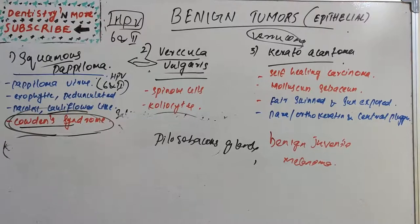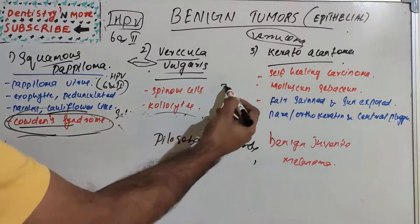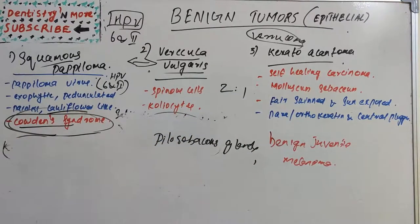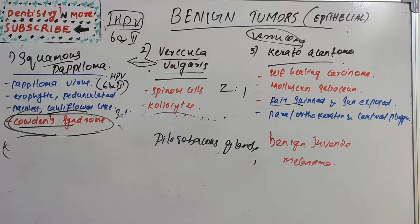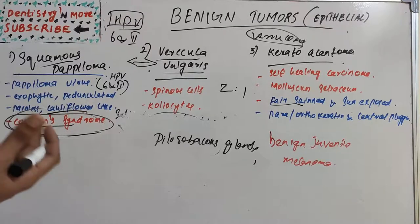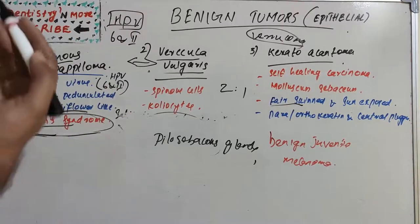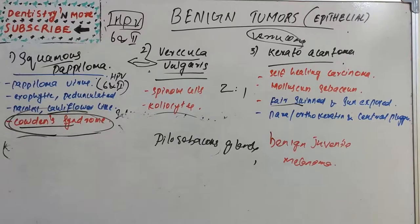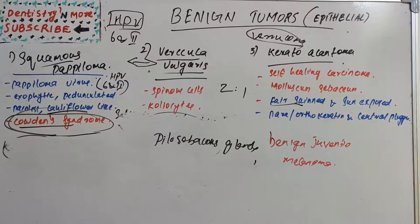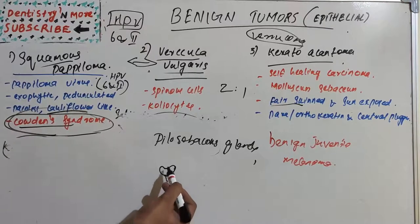Keratoacanthoma occurs in all age groups, but incidence increases with age. The male-to-female ratio is 2:1, and it is more common in fair-skinned people and in sun-exposed areas. The face, neck, and dorsum of the upper extremities are the most common sites. Intraoral lesions are quite uncommon but may be seen on the lips due to sun exposure.